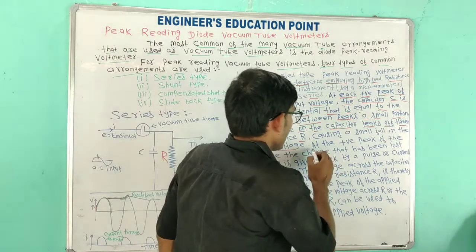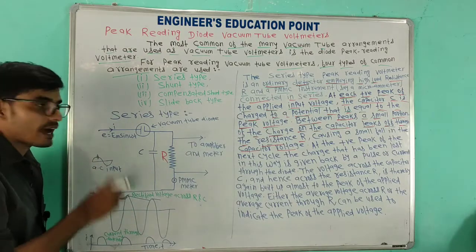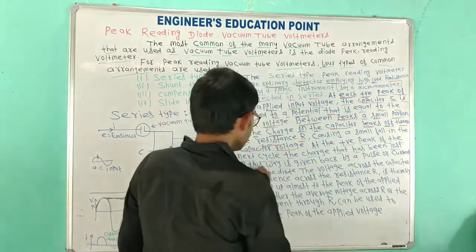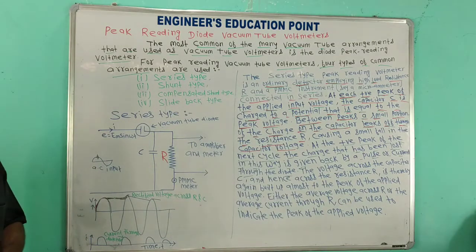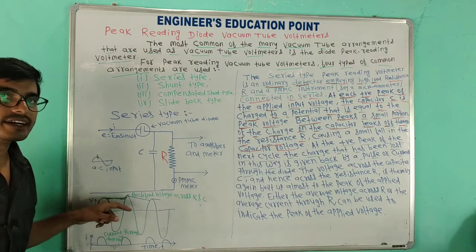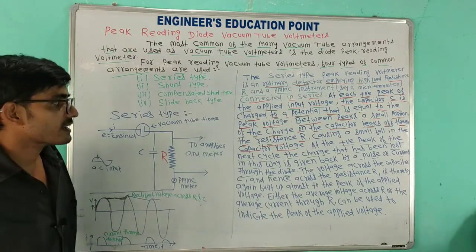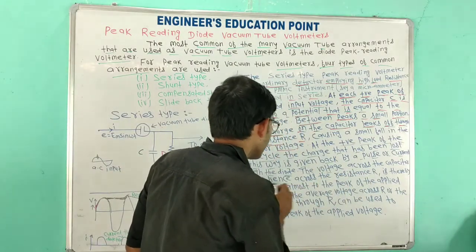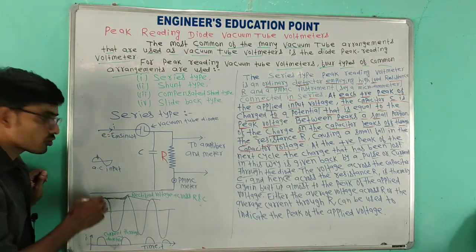There is a small fall in the capacitor voltage due to resistance R. At the position of the positive peak of the next cycle, the charge that has been lost in this way is given back by a pulse of current through the diode. At the next positive peak, the voltage across capacitor C, and hence across resistance R, is built up almost to the peak of the applied voltage.